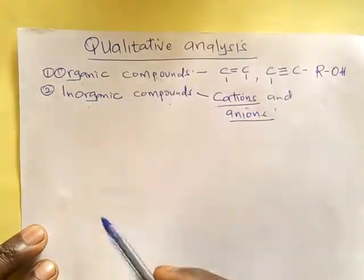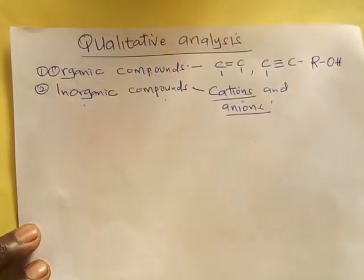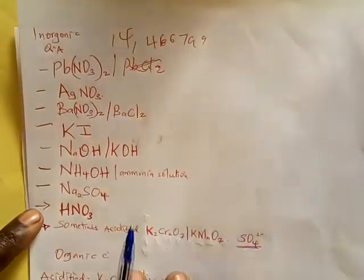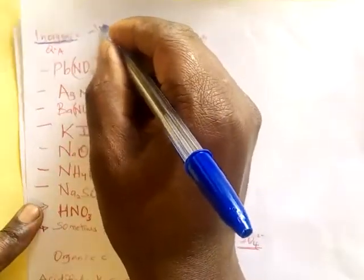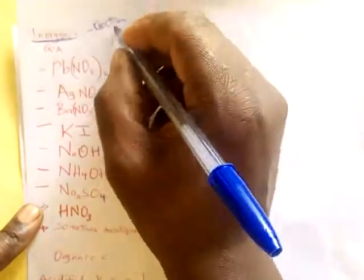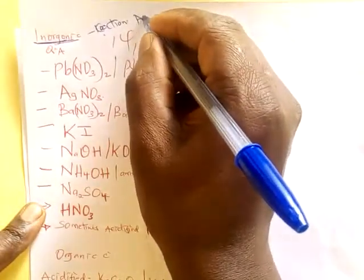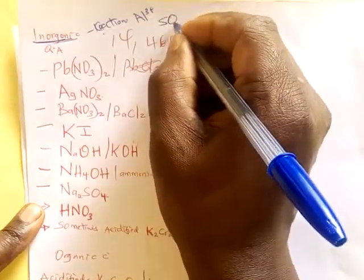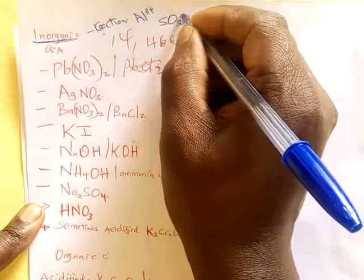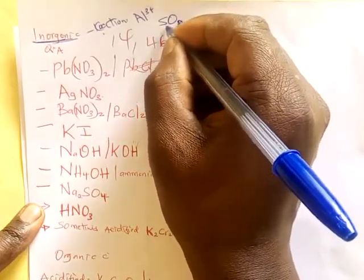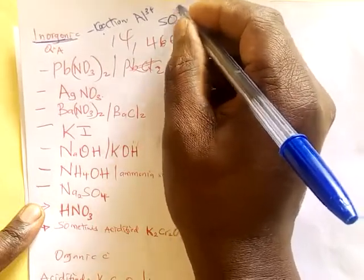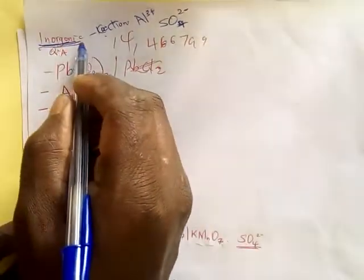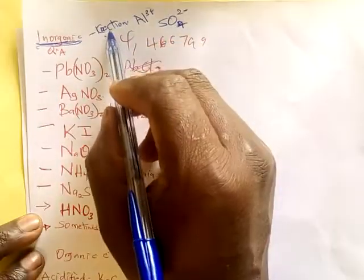So before you start doing anything, what you need to do is know the reagents being used. In inorganic chemistry, where we test for ions — cations are positively charged, like aluminium 3+, and anions are negatively charged. So in inorganic qualitative analysis, we test for cations and anions.